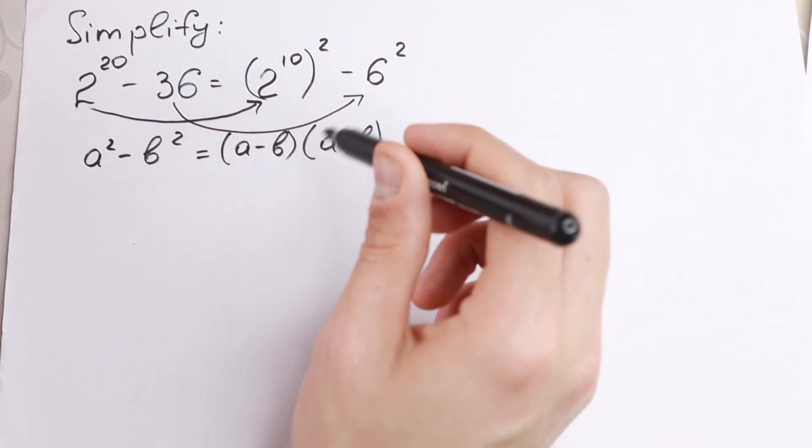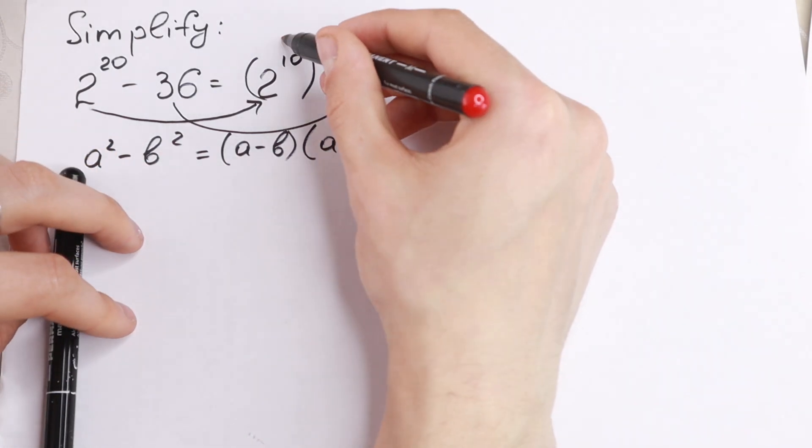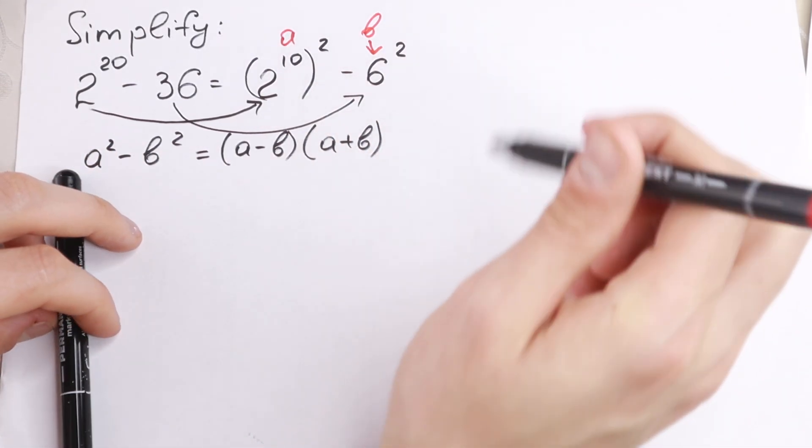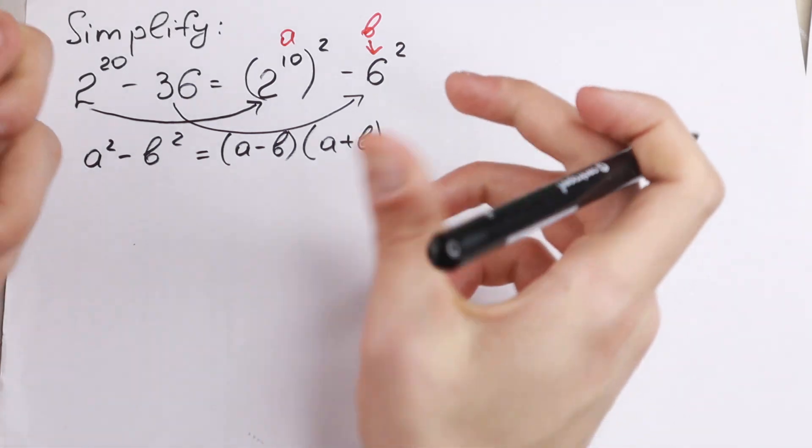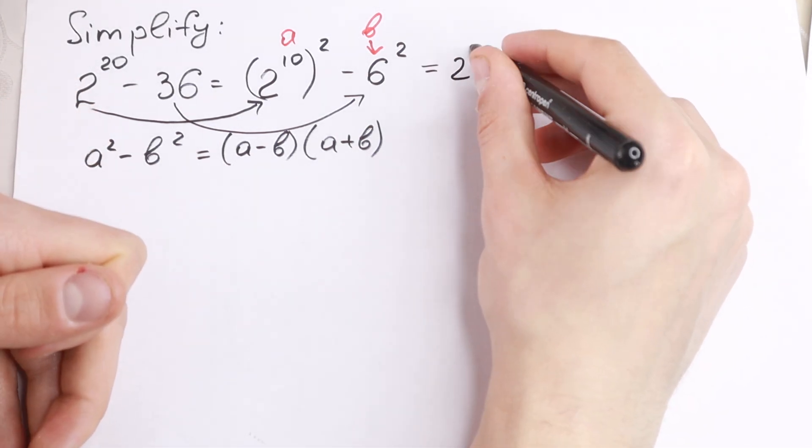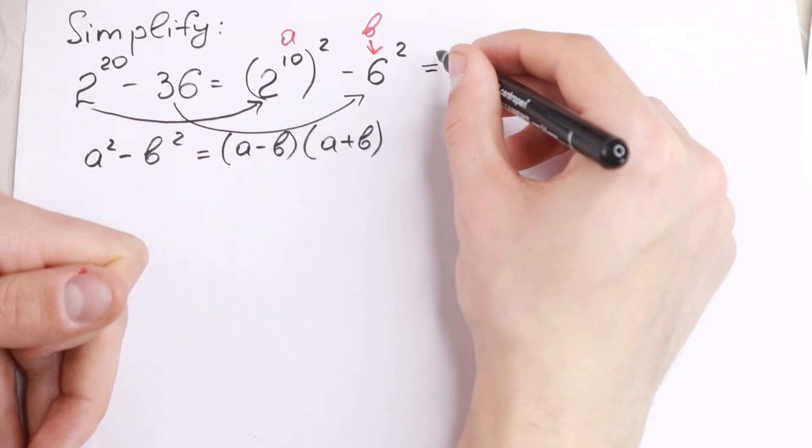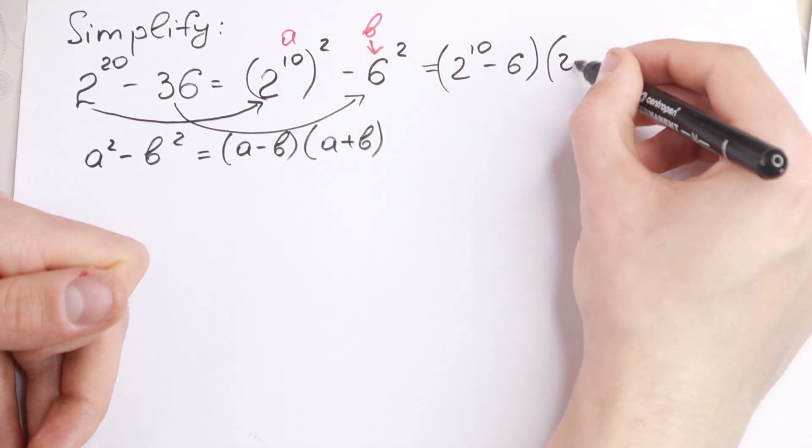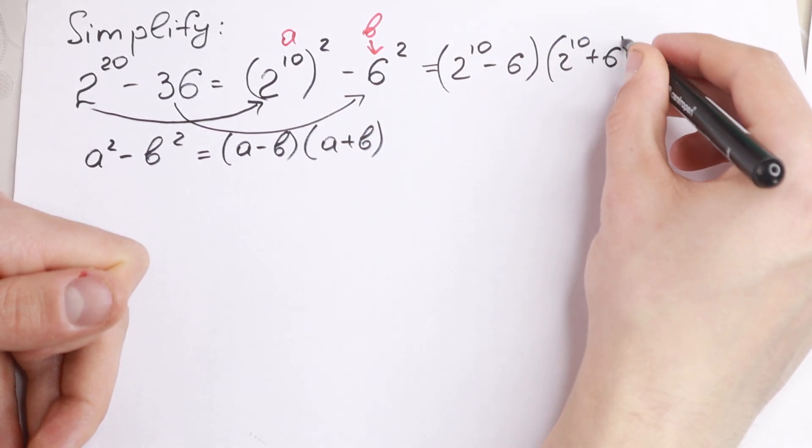This is our a, 2 to the 10th power is our a, and this is our b. So let's use this formula. We will have 2 to the 10th power minus 6 and 2 to the 10th power plus 6.